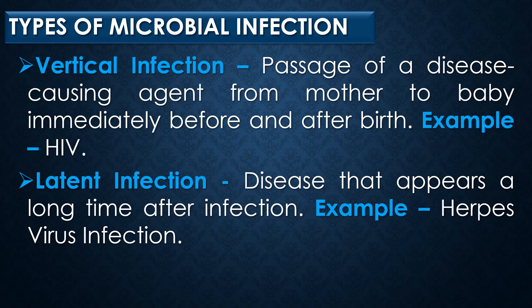Next is vertical infection. A passage of a disease-causing pathogen from mother to baby during the period immediately before and after birth is called vertical infection. An example is HIV infection. Finally, latent infection is a disease that appears a long time after infection, with herpes virus infection as an example.